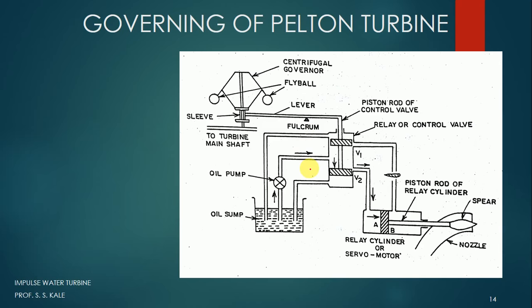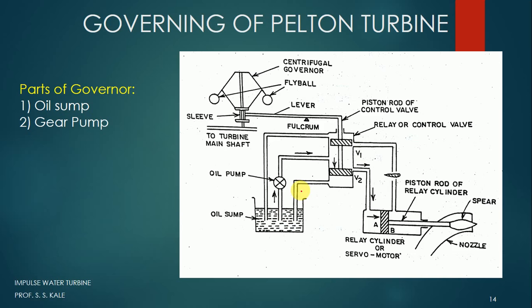Here we are observing many parts. The first part is the oil sump, where oil gets stored and can be pumped into the system. The next part is the gear pump. This oil pump is called a gear pump because gears are used inside it. The function of the gear pump is to suck oil from the oil sump and supply it to the further system.